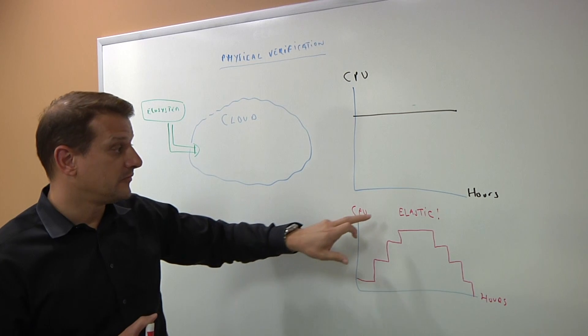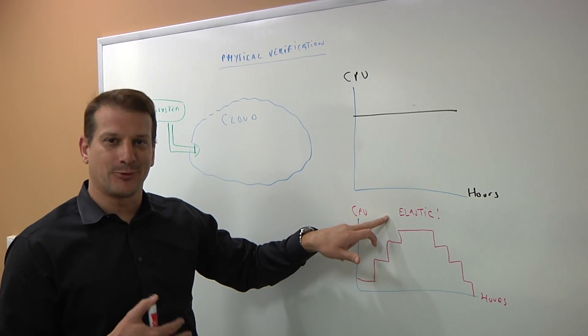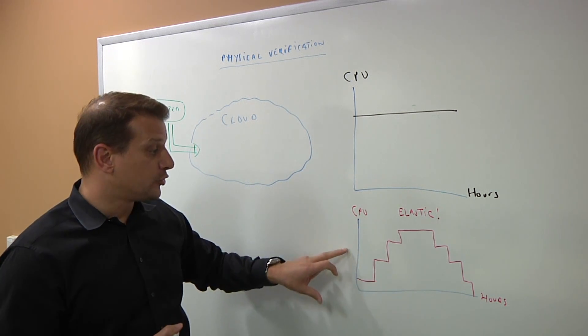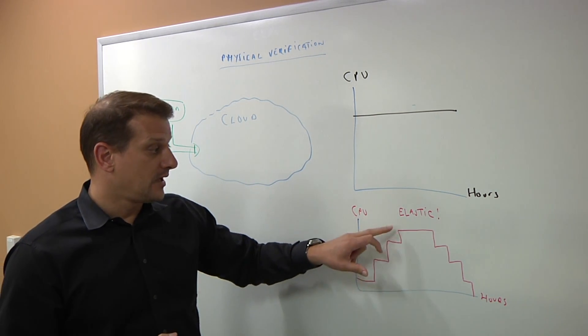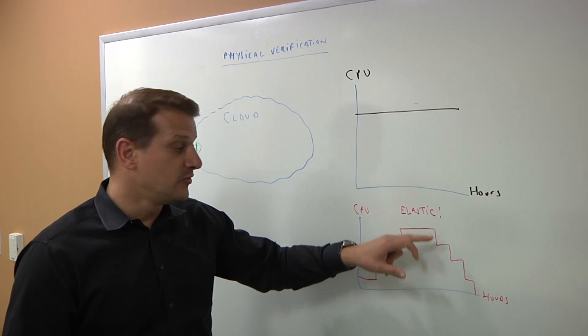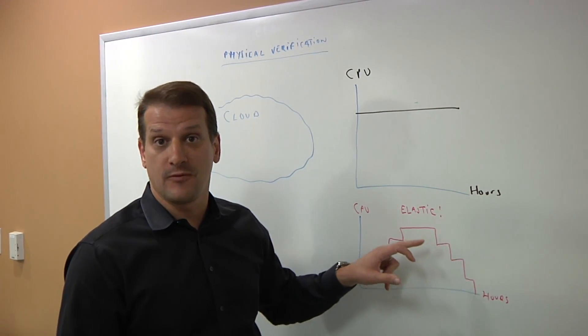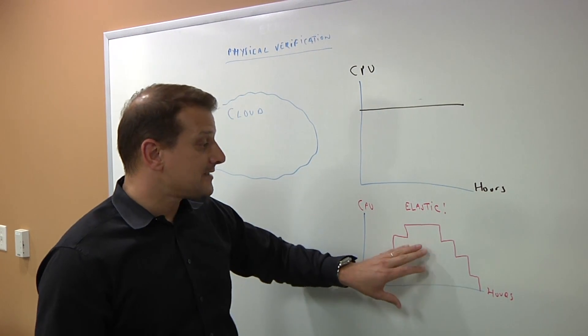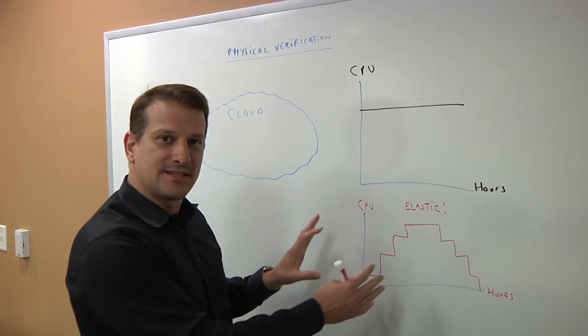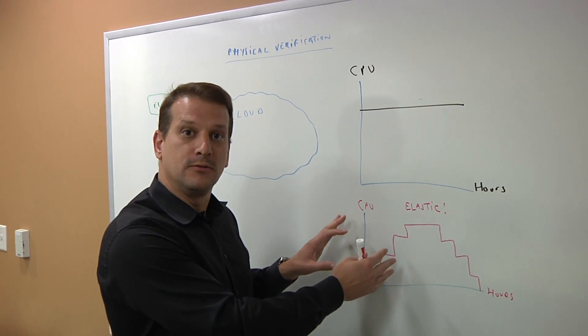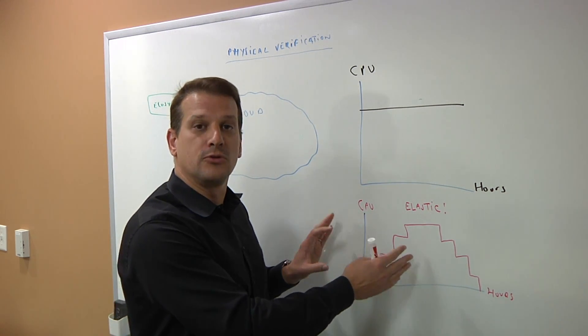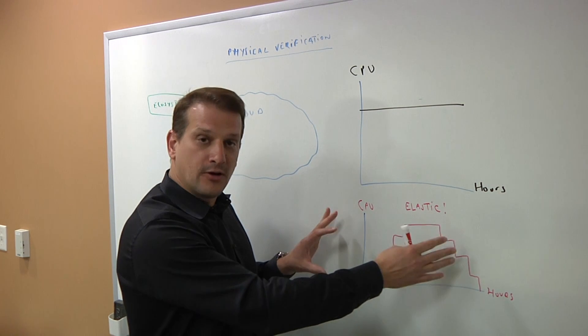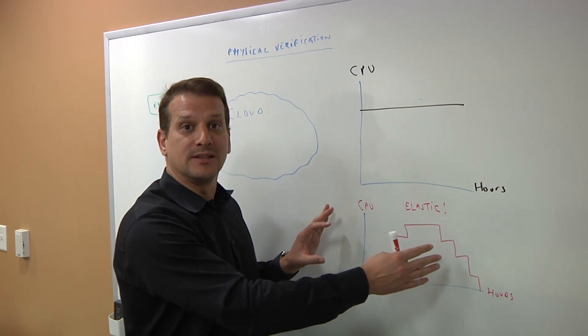Now, with this elasticity that the cloud is always talking about, that you can have more and less CPU, if the tool could ramp up, adding CPU on the fly and removing them when they become more expensive or when you later in your physical verification cycle, that's the best utilization because this is the best performance CPU utilization ratio you can get.